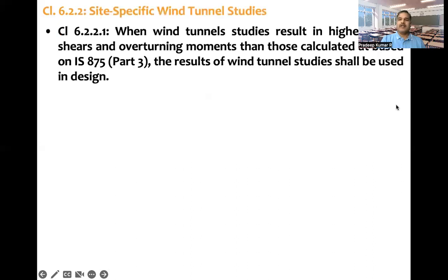Now another condition is when wind tunnel studies result in higher storey shears and overturning moments than those calculated based on IS 875 Part 3, the wind code. The results of wind tunnel studies shall be used in the design. So there are two ways: one is based on IS 875 Part 3.